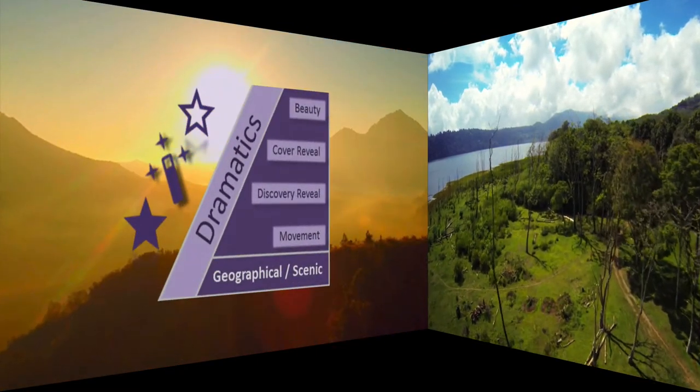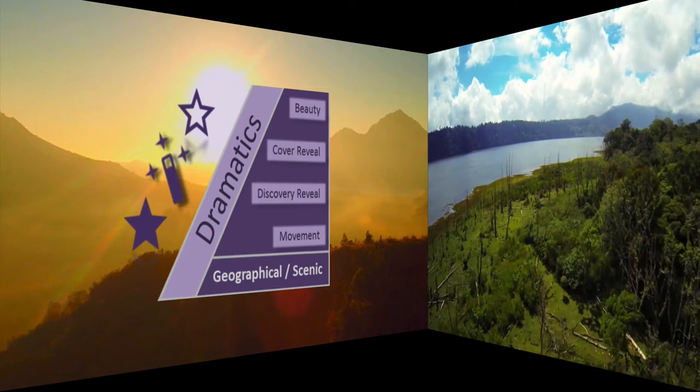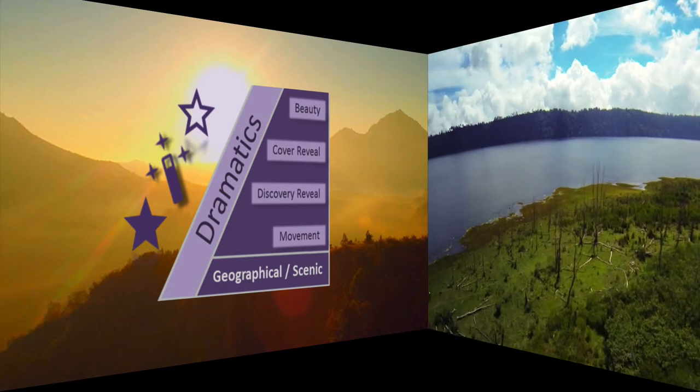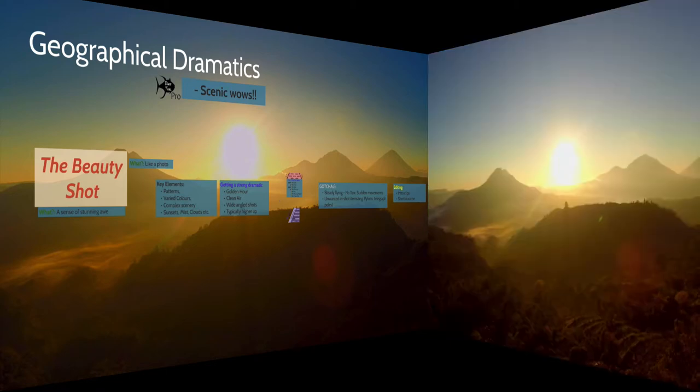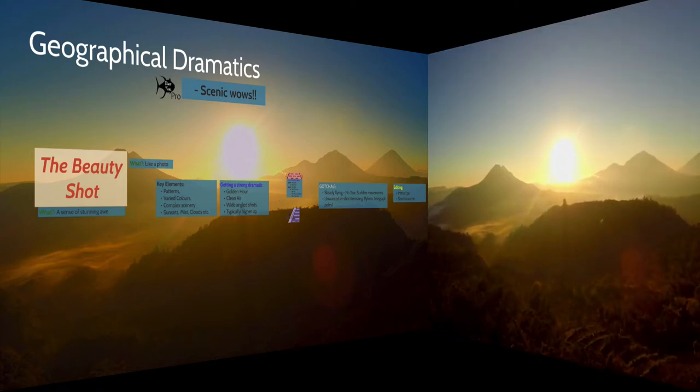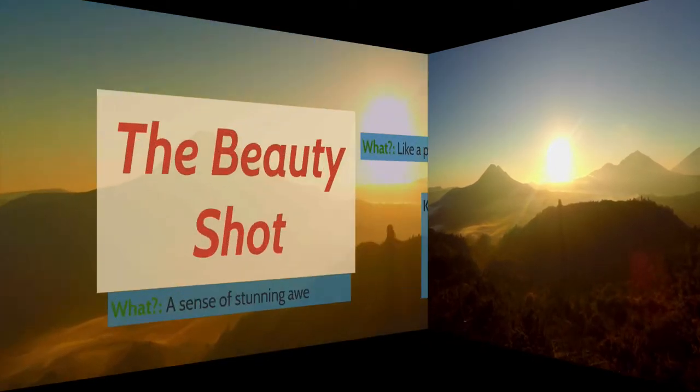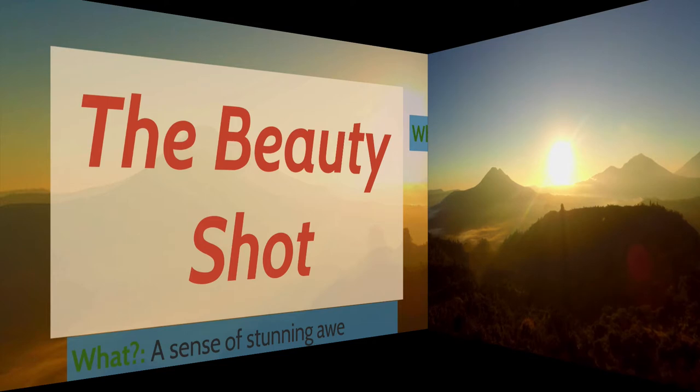The specific set of dramatics that we're discussing here are the dramatics that come from what you see in the scene, in your view, what is going on in the geography there. Specifically, the beauty shot. Look at the photo in the background here. This is something that I collected mid-flight in Bali. Very stunning as you can see. The way to think about the beauty shot is it's the shot that generates a sense of stunning awe when people see it. It's where their jaws drop to the ground exclaiming how beautiful it actually is.